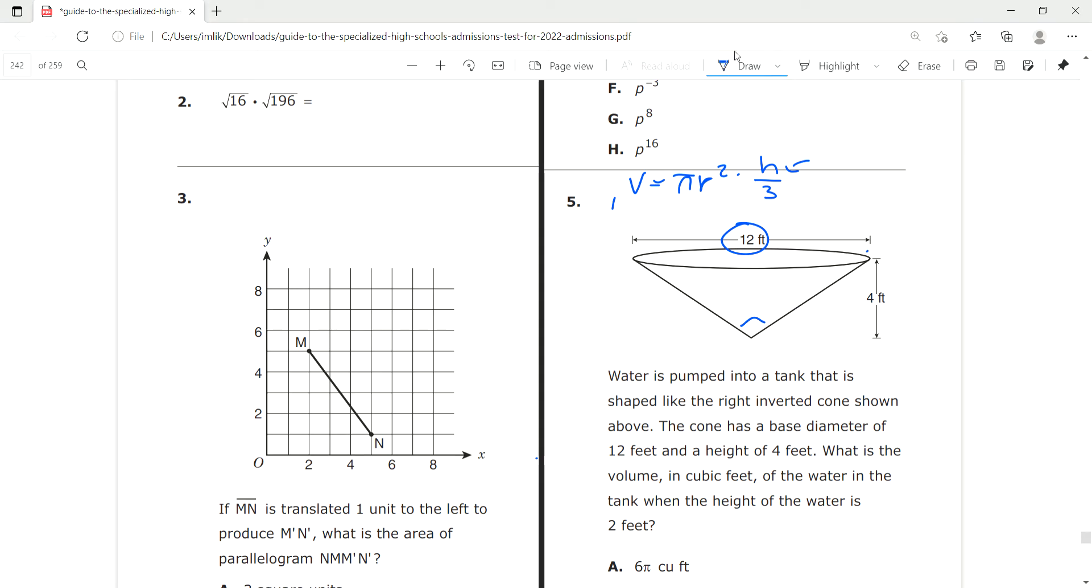Well, we remember that we labeled this as a right inverted cone, meaning that if we draw a line up, the distance from here to here at this height is going to be the same here and here. If we go up another foot, the distance between here and here is also going to be the same.